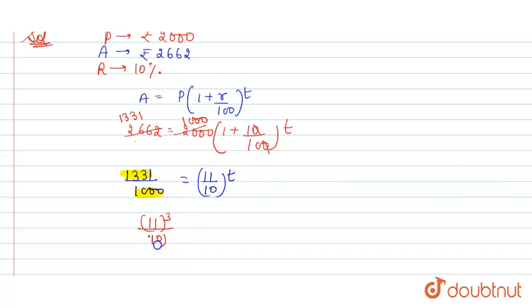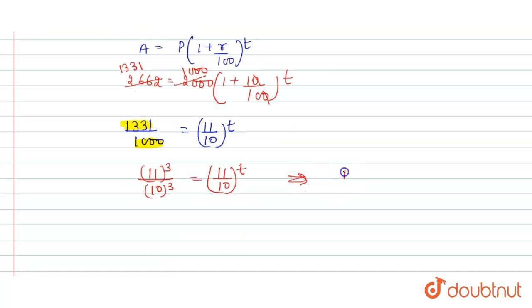So write it here, that is whole cube of 11 divided by whole cube of 10 equals (11 by 10) raised to power t. And we can write this as (11 by 10) whole cube equals (11 by 10) raised to power t.